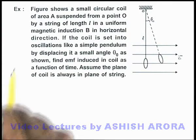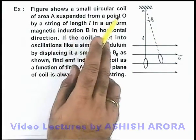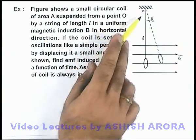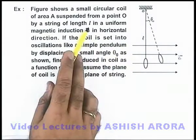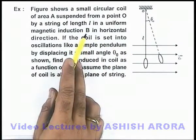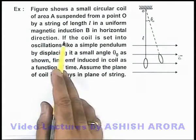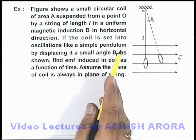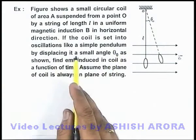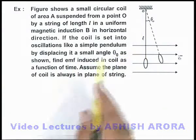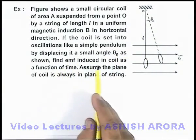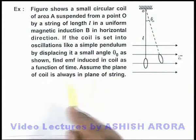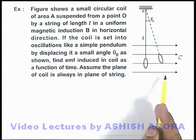In this example, a figure shows a small circular coil of area A, suspended from a point O by a string of length l, in a uniform magnetic induction B in the horizontal direction. If the coil is set into oscillations like a simple pendulum by displacing it a small angle θ₀, we are required to find the induced EMF in the coil as a function of time. We also assume the plane of the coil is always in the plane of the string.